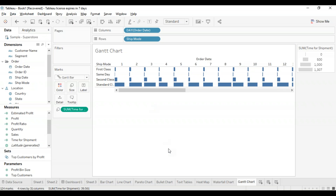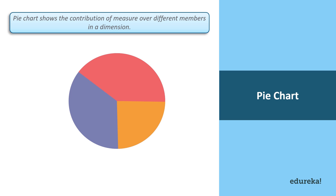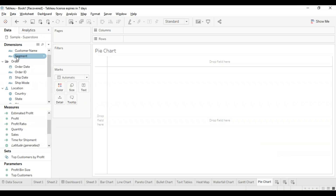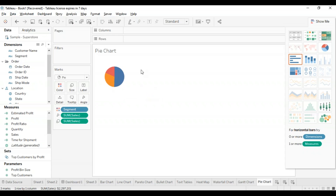Now let's go back to something a little more old school — the pie chart. A pie chart shows segment-wise data. It can show the contribution of a measure over different members in a dimension, and the angle of the pie determines the measured value. Different colors can be assigned to the pie to represent different members in a dimension. On a fresh worksheet, we're going to select segment and sales from the data pane, then go to the show me button and select the pie chart — and there you have it, pretty simple.